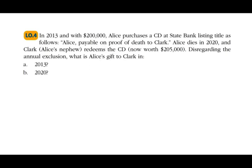In 2013, Alice purchased a certificate of deposit for $200,000, listing title as: 'Elise, payable on proof of death to Clark.' So once Elise dies and somebody shows proof, the money goes to Clark. Elise dies in 2020, and Clark — the nephew — redeems the CD, which is now worth $205,000. Disregarding the annual exclusion, what is Elise's gift to Clark in 2013? The answer is: there is no gift in 2013, because the nephew did not have immediate access — it's not a present interest. Therefore it's not a gift, and in 2013 there's no gift because Clark cannot use the money.